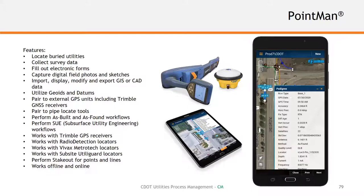Importing design data includes the ability to utilize geoid models and datums — a vertical correction that helps establish actual elevations relating back to our construction plans. Traditional GIS platforms do not have this ability. This is a big plus for us because when we collect as-built data, elevations can relate back to old plans and new plans — apples to apples — which is extremely important. This pairs with high-accuracy RTK-type GPS positions.